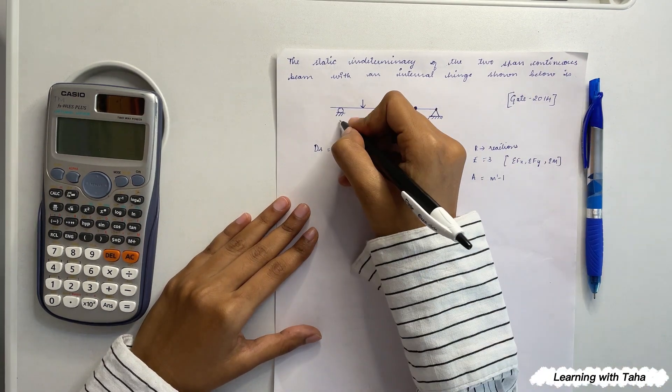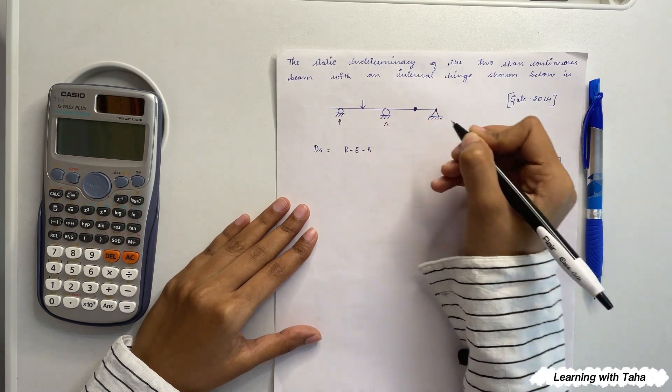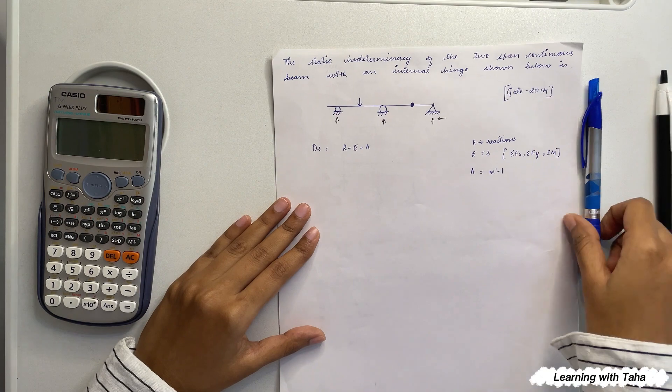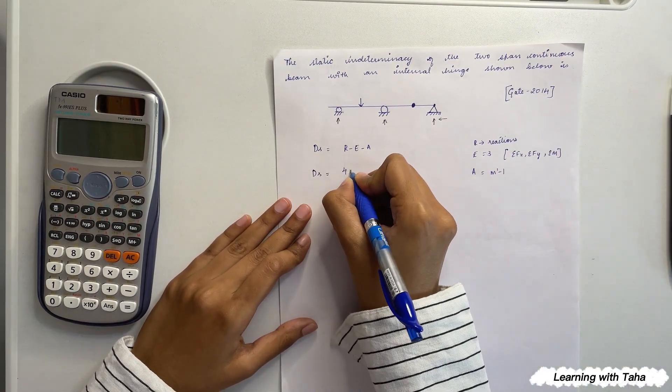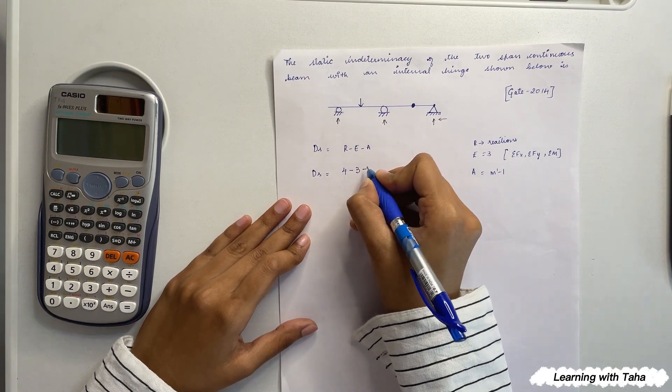So over here we have one reaction at the roller support and two reactions at the hinge. So overall we have four reactions, and E is equals to three for beams, and A is equals to m...